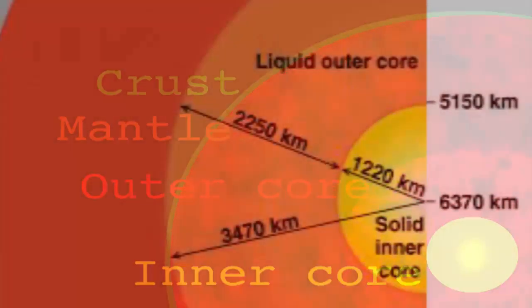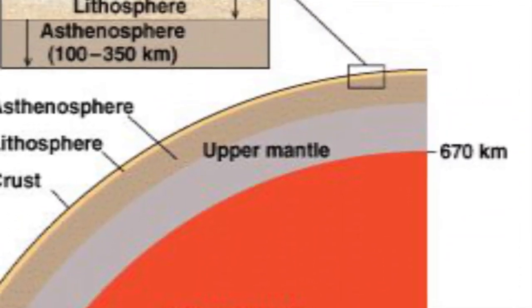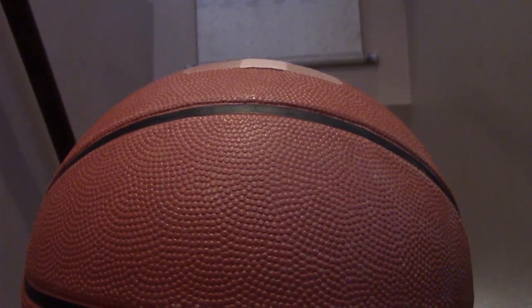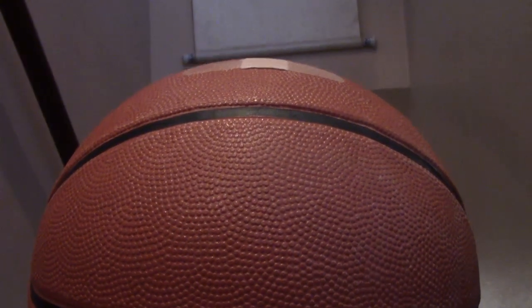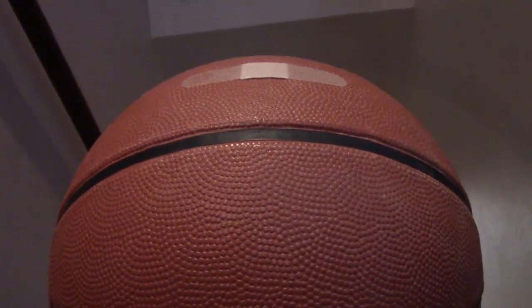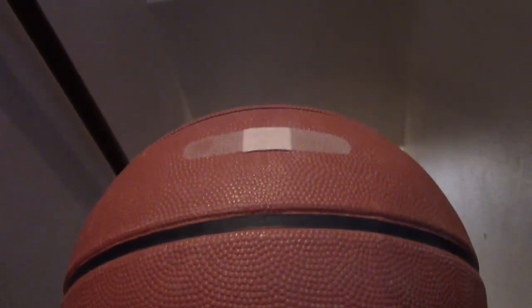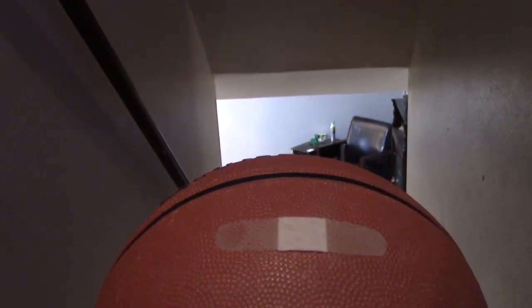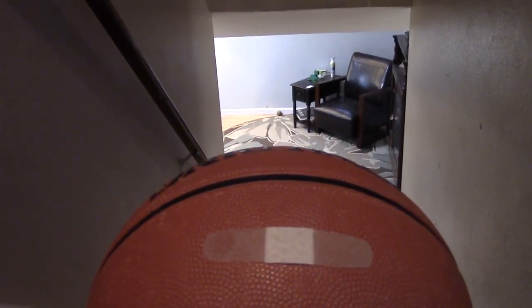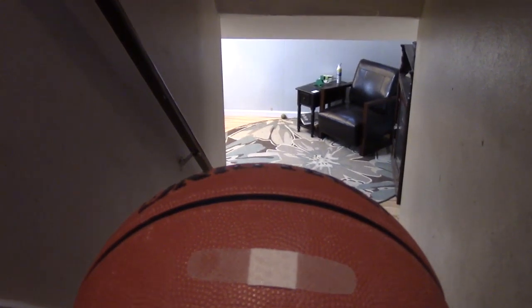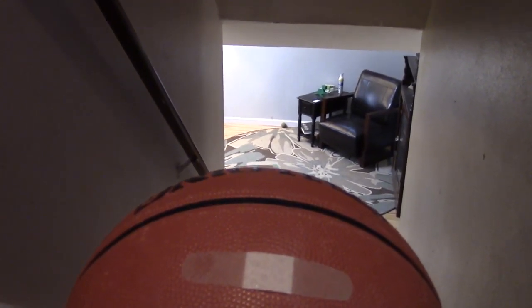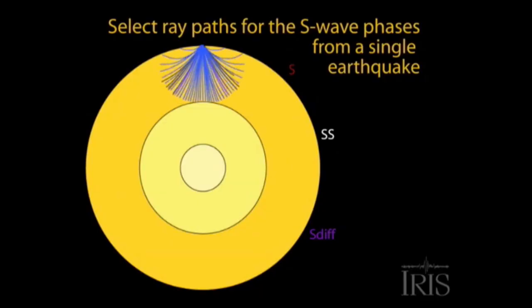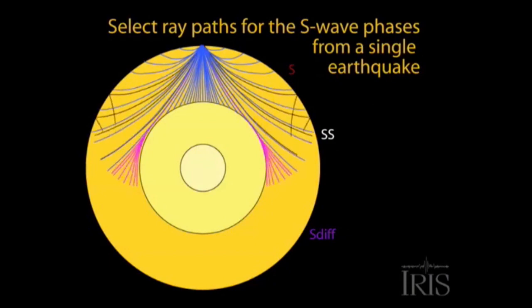And here we are, living on top of this crust, whose thickness is analogous to a band-aid on a basketball. If you shrink the Earth down to the size of a basketball, the thick part of the band-aid is like the continental crust, and the thin part is similar to the thickness of ocean crust. In this analogy, the moon would be a tennis ball about 24 feet away. We've traveled to that tennis ball, but we have never drilled through that band-aid here on Earth. It is solely from studying seismic waves that we can see the structure deep within our planet.